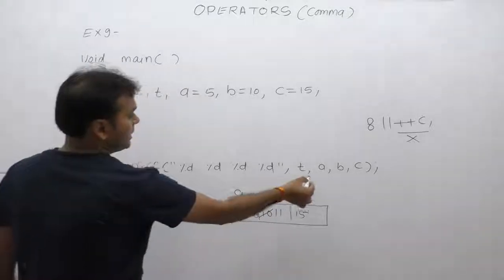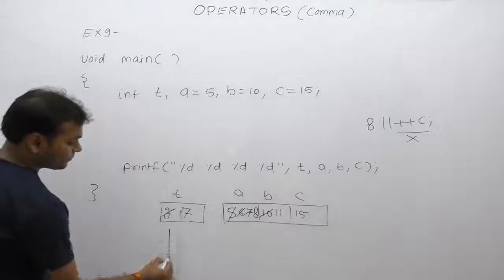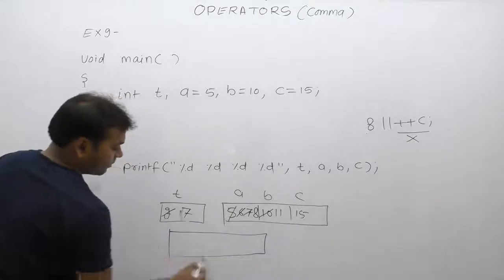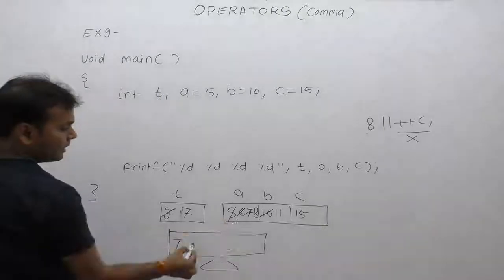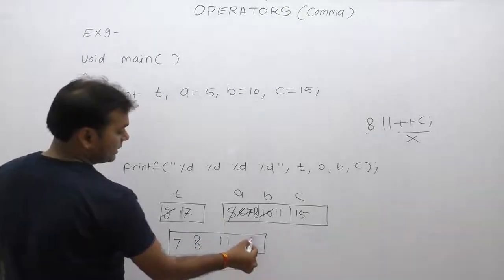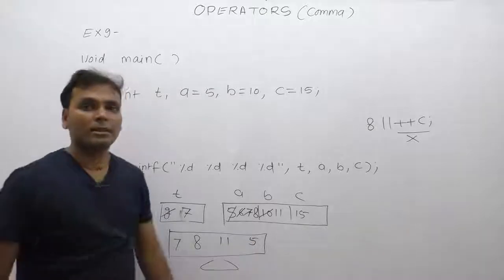Printed value of T, A, B, C. Printed value of T is 7, printed value of A is 8, B is 11, C is 15. This is the final result.